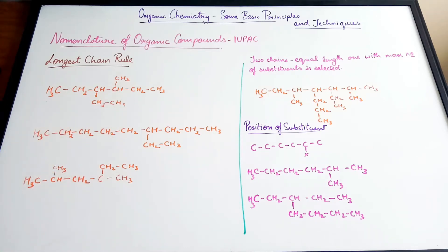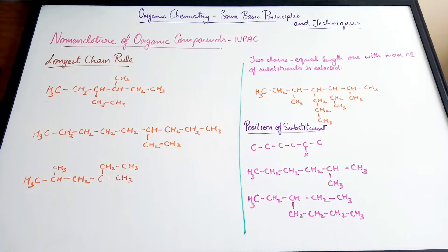For the IUPAC name of a compound, you need something called the word root, and the word root will give us the number of carbon atoms in the chain. The first rule that we need to follow is the longest chain rule. The word root of the IUPAC name will be of the longest chain, meaning that particular compound is a derivative of that particular long chain.